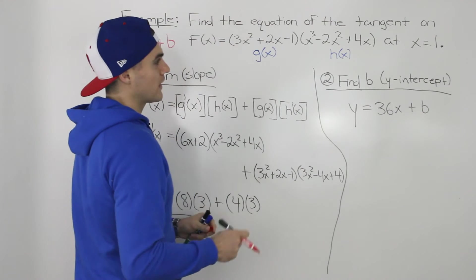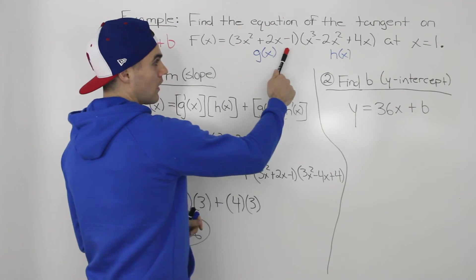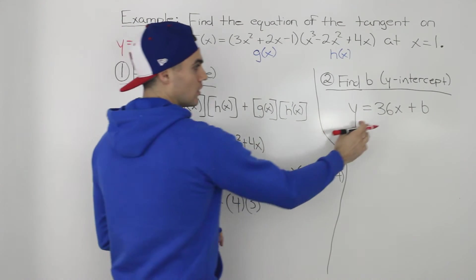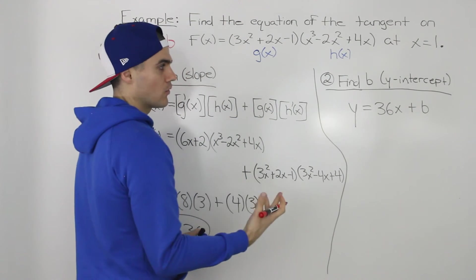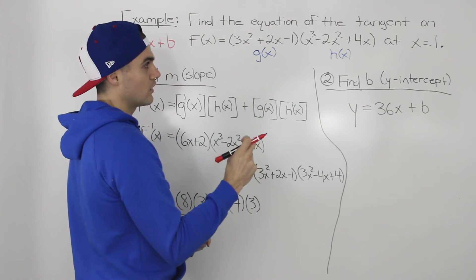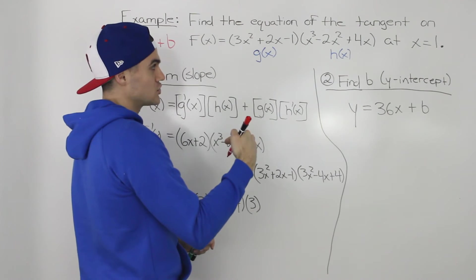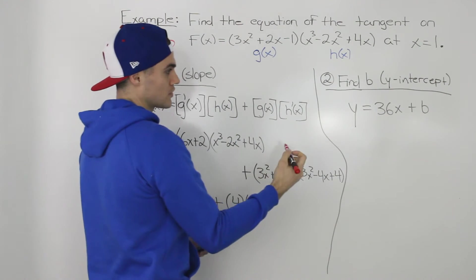We know that a coordinate on this tangent line is going to happen at an x value of 1 on this function. So we know the x value is going to be 1, but what's the y value going to be? We can find the y value of the coordinate by plugging in 1 into the original function.